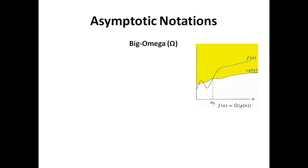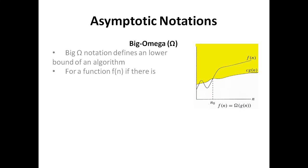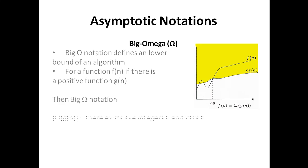Now let us look at Big Omega notation. As shown in the graph, Big Omega notation defines the lower bound of an algorithm — meaning the execution time will always be higher than this notation.